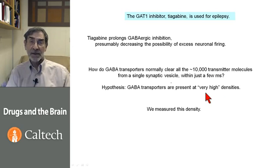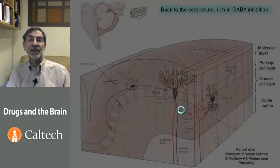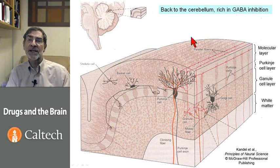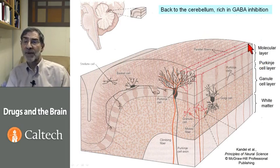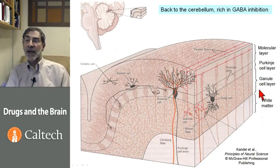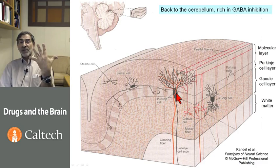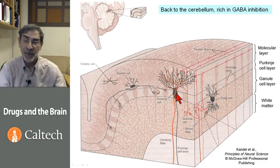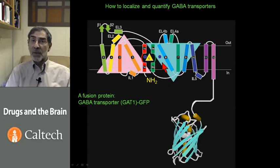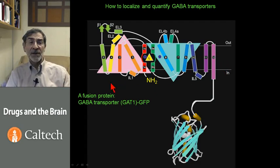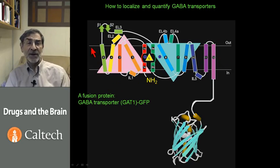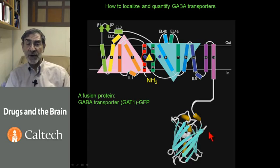One way this occurs is that GABA transporters are present at very high densities, so each needs to function only once after a vesicle is released. To measure this density, we linked the gene for the transporter — schematically shown here as having 12 transmembrane helices — to the gene for green fluorescent protein, producing a nearly fully functional GABA transporter that is also fluorescent.